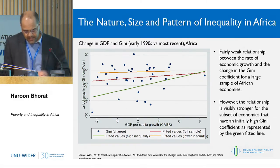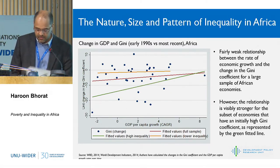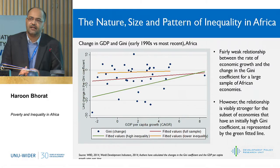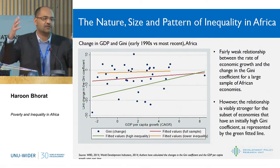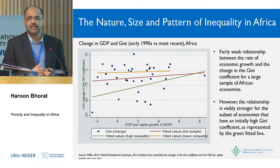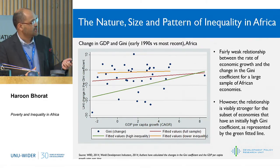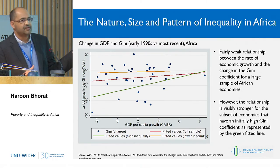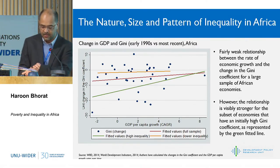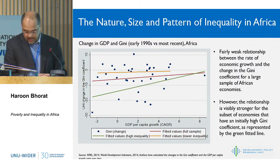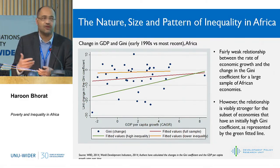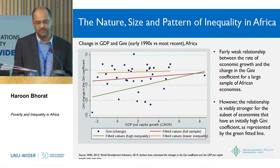Looking at the GDP story, as Kathleen's paper also refers to, there isn't a Kuznets relationship. Gary Fields has written a textbook examining global evidence on the Kuznets relationship and it isn't evident in the African context. We do have an interesting result where the green line — the fitted values for high-inequality African economies — shows the strongest and most positive relationship. This suggests a certain path dependency in the growth dynamics of these highly unequal economies: as they grow, they are more likely to continue to replicate patterns of income inequality.